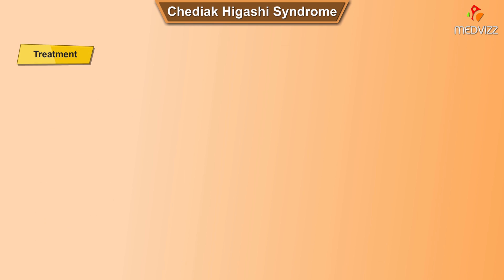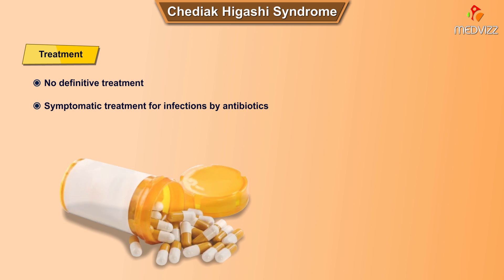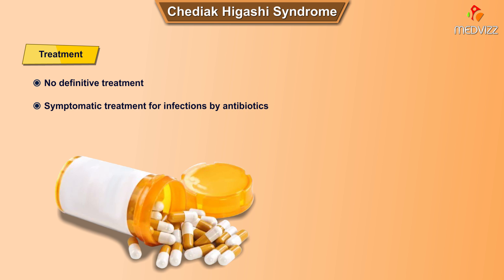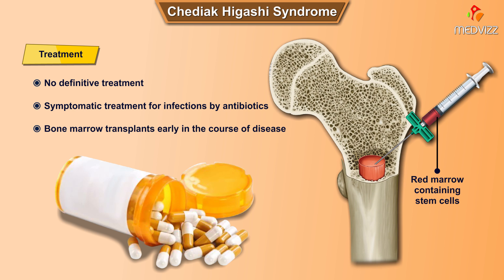Treatment. There is no definitive treatment for Chediak-Higashi syndrome. Symptomatic treatment for infections by antibiotics is advised. Bone marrow transplants early in the course of disease have been successful.